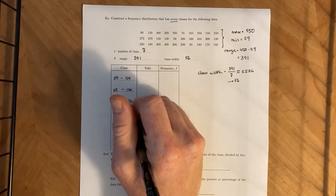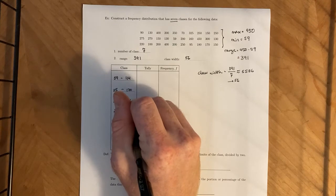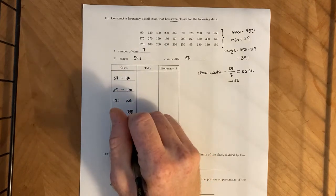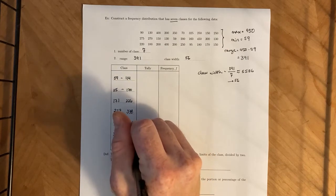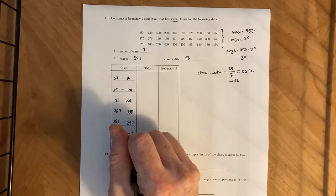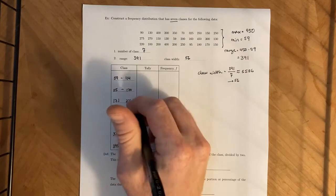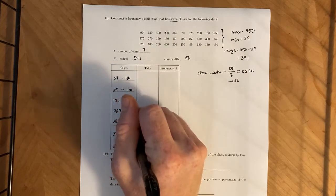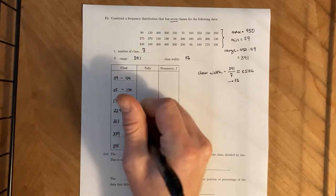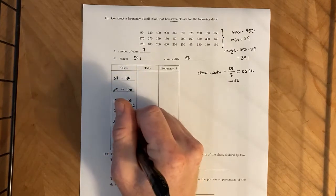All right, both ways work. It'll give you exactly the same class limits. Oh, I skipped one. So this one right here should be 282. This one should be 338. I apologize about that. So those are our classes.